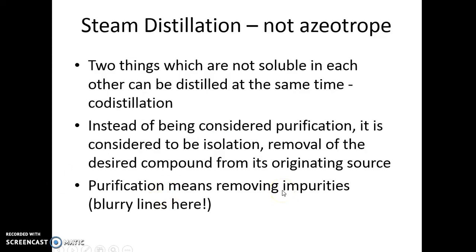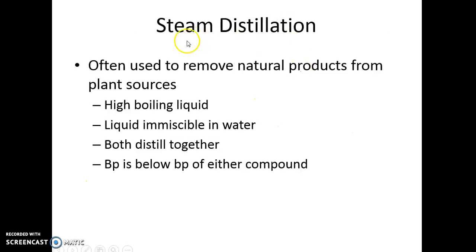Purification is removing impurities — it's a somewhat fine distinction, but worth noting. Steam distillation is used a lot to remove natural products from plant sources because they're typically high boiling, and with steam distillation you keep your temperature down below 100 degrees.